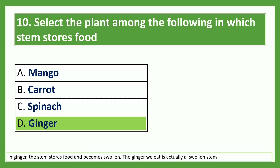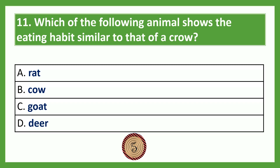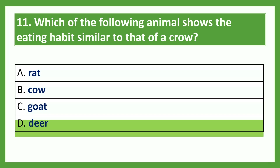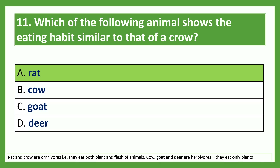Which of the following animals shows an eating habit similar to that of a crow? Option A: rat; Option B: cow; Option C: goat; Option D: deer. The answer is rat. Rat and crow are omnivores — they eat both plants and flesh of animals. Cow, goat, and deer are herbivores — they eat only plants.